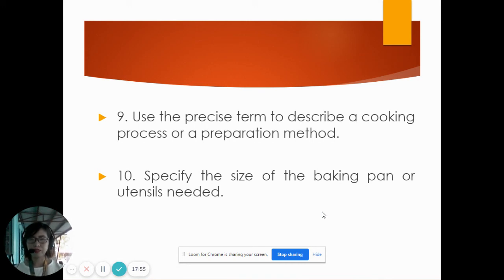Number ten: specify the size of the baking pan. For example, when you bake, before you pour the mixture in the baking pan, it should be specified. Depending on your available pan, it can be circular or rectangular. Remember that before putting the mixture, we should also grease the pan with oil or butter and then line it with wax paper or parchment paper.